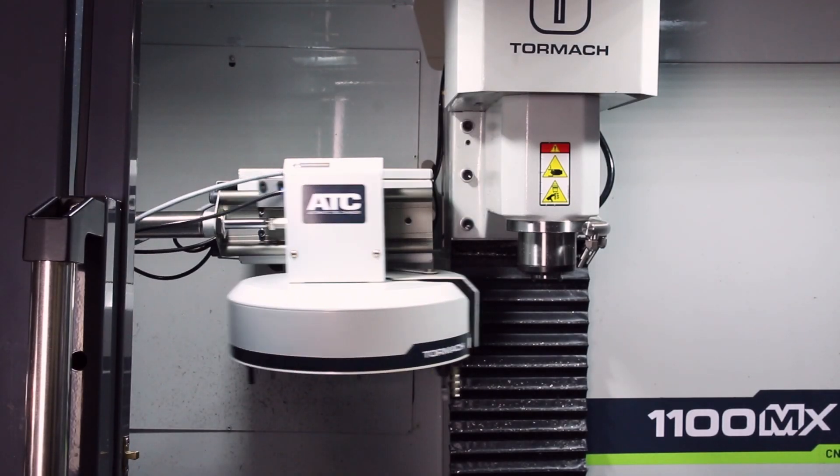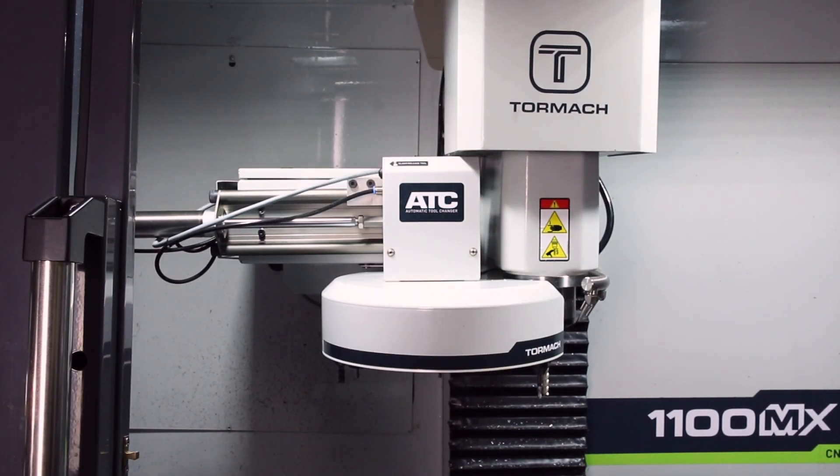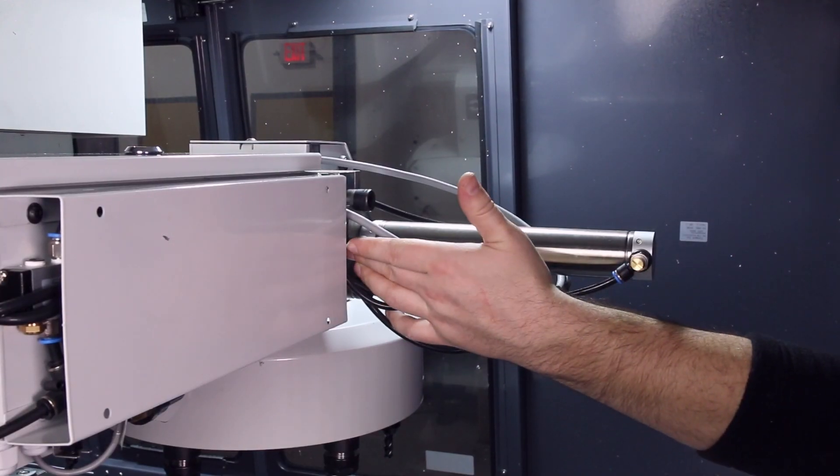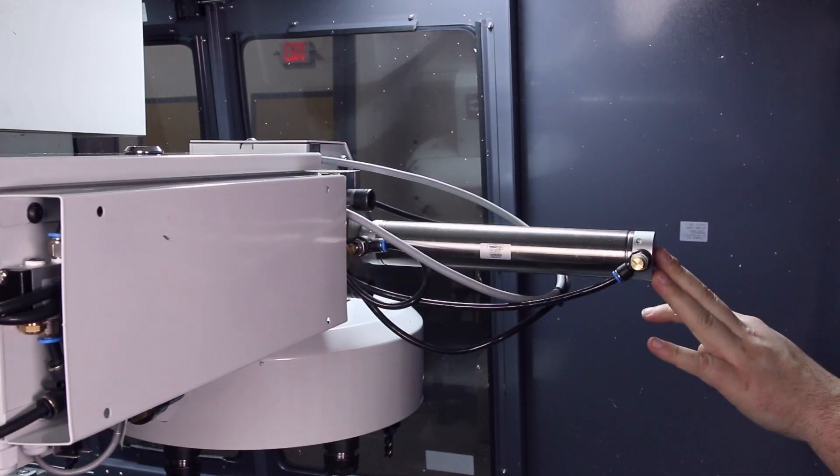If you feel like your ATC is moving too fast or too slow, you can adjust the speed with two flow control valves on either end of the cylinder. Your limitation will always be how much air you can get out of the cylinder.